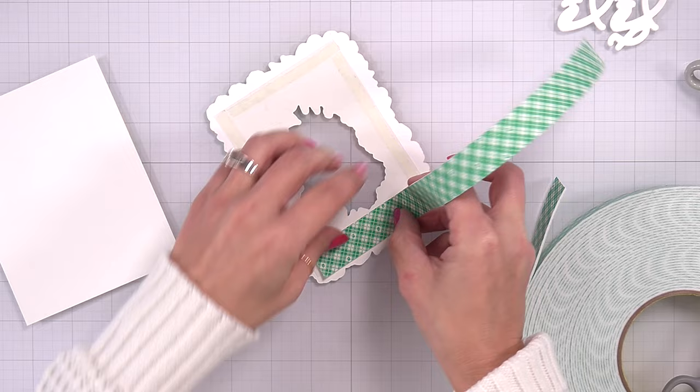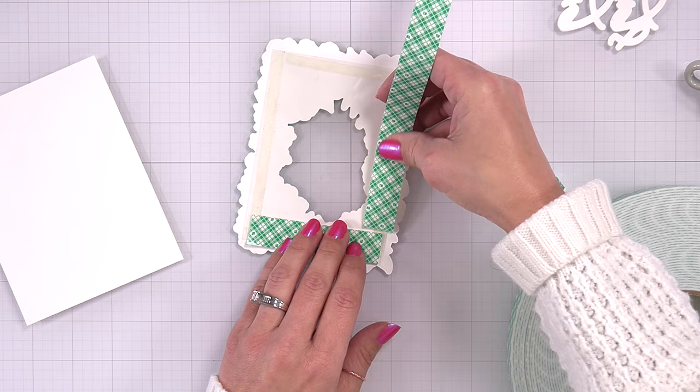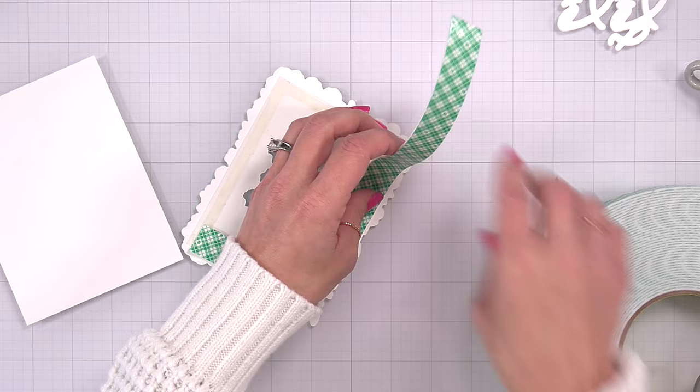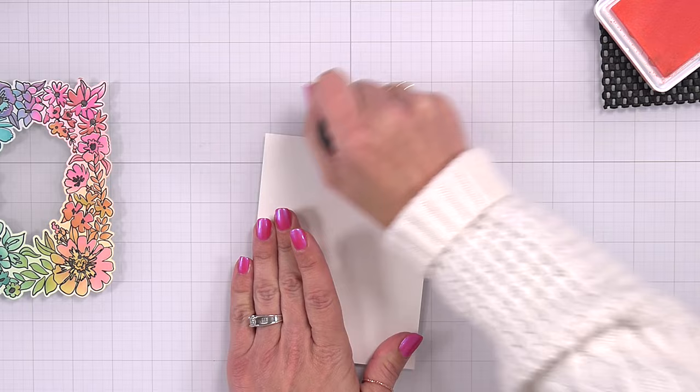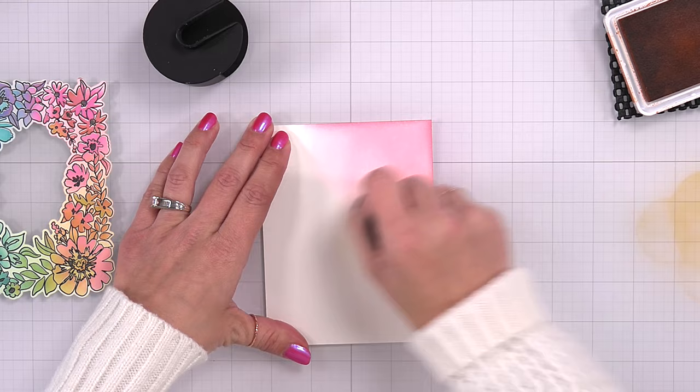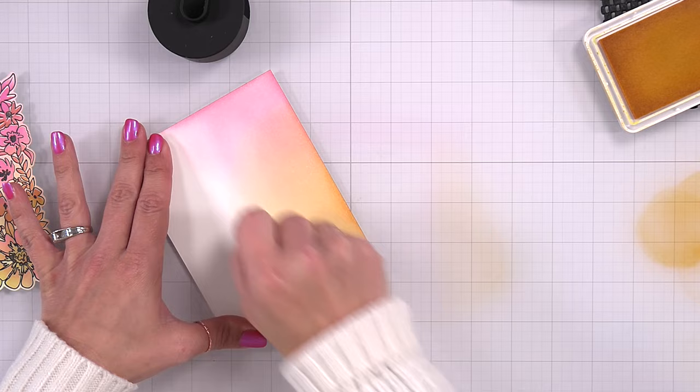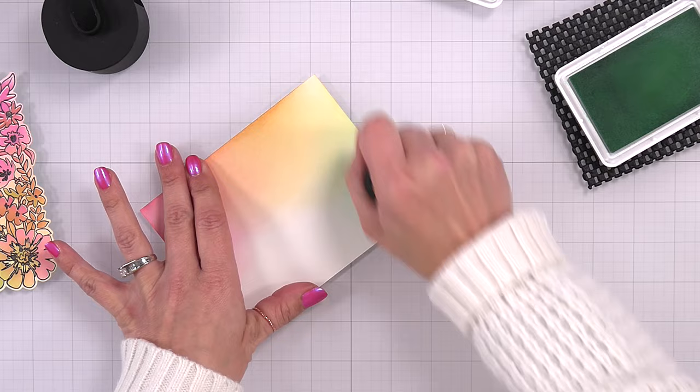Then I'm going to take some foam tape and layer that behind my frame. This is one of the steps where if you really make sure your foam tape is connected, you could create a well to create a shaker card, but I'm just using it to create some lift. This would look really pretty just on a white card front, but I decided to really tie in the rainbow, and I took another piece of smooth white cardstock cut to four and a quarter by five and a half, and I'm going to go around all the edges with those same colors of ink that I previously used.